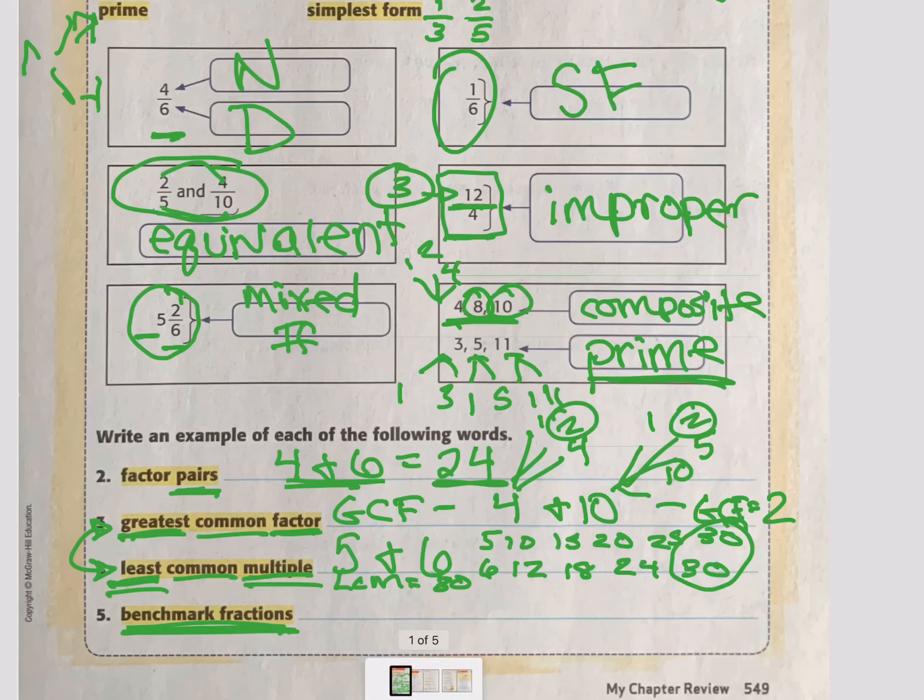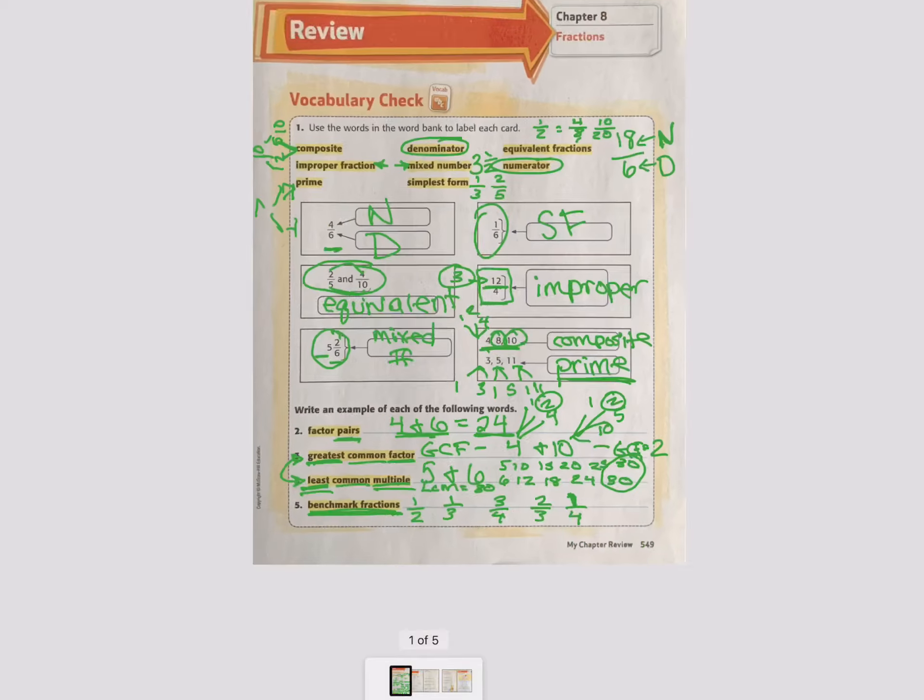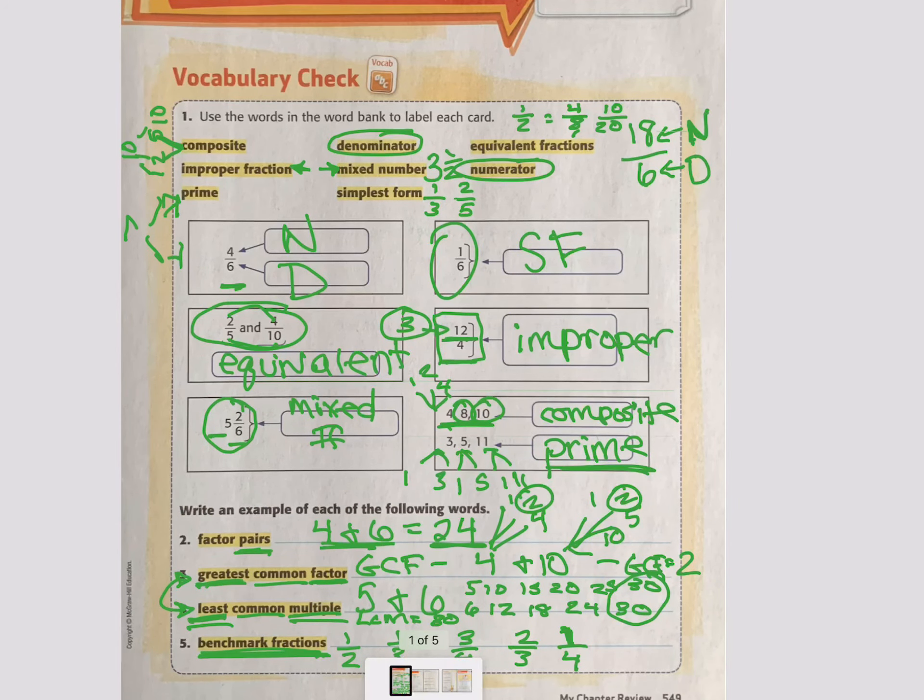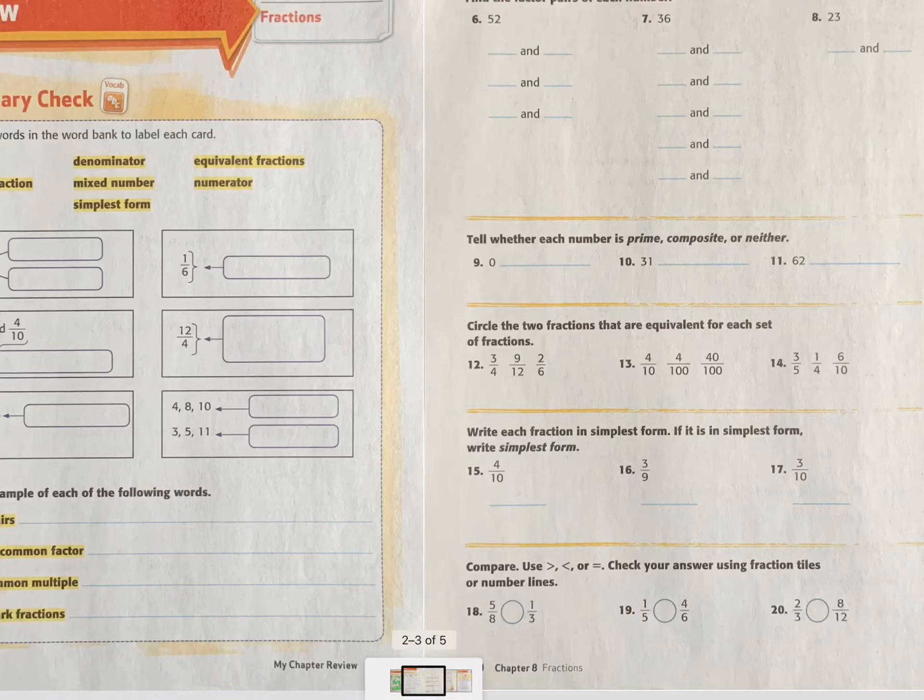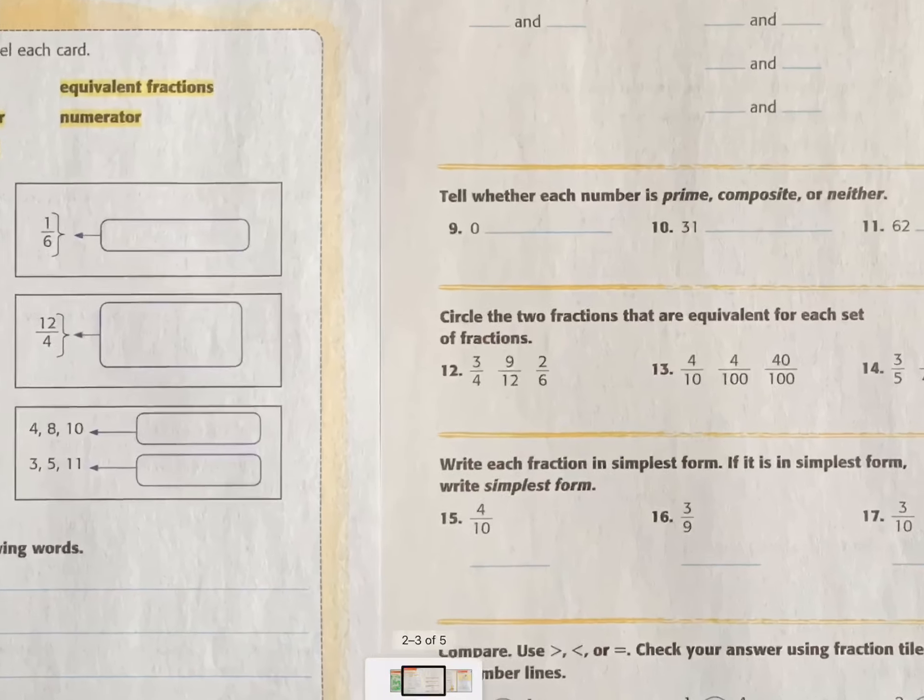And then we have benchmark fractions. Those are just commonly used fractions that make it easy to compare and order. So like 1/2, 1/3, 3/4, 2/3, 1/4. Can't write. Okay. Good. How are we feeling on that front page with the vocab? Let me know.